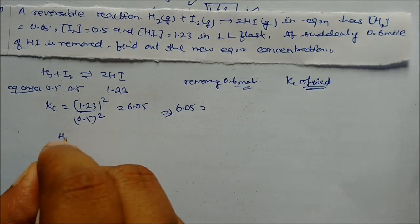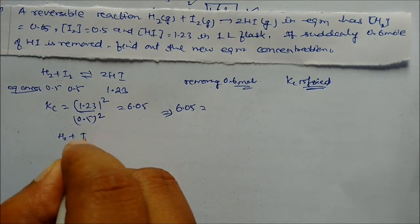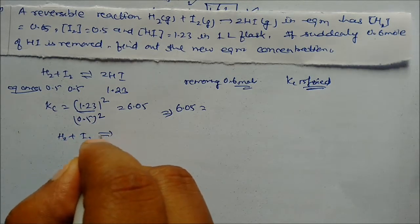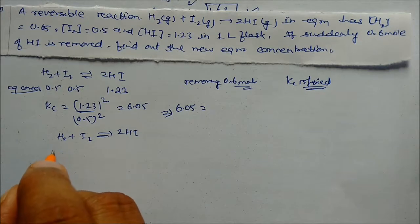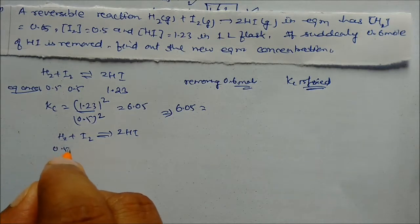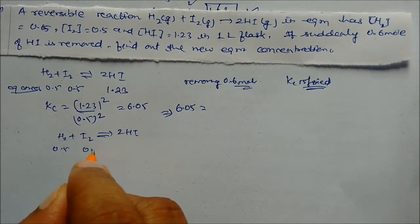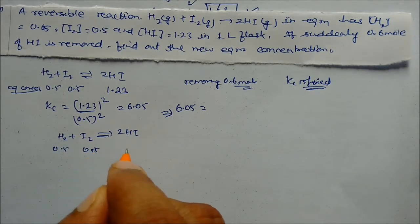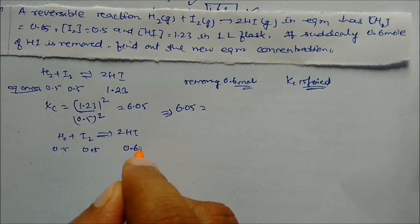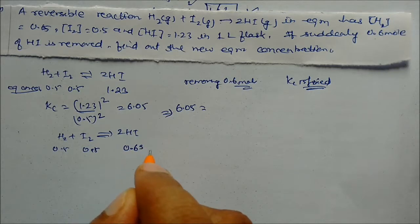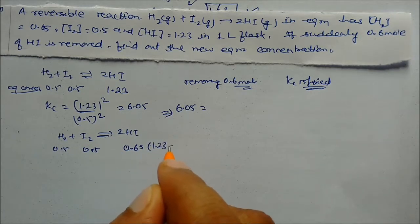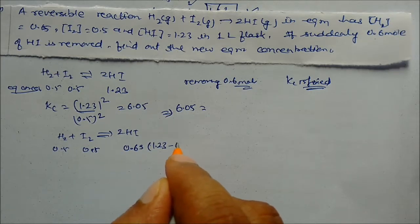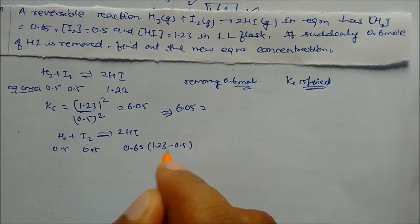Now for the new equilibrium, H₂ = 0.5 mol, I₂ = 0.5 mol, and HI becomes 0.63 mol (that is 1.23 minus 0.6).